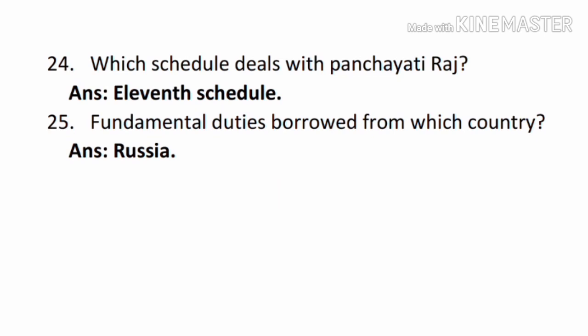Question twenty-three: the Concurrent List was borrowed from which country? — Answer: Australia. Question twenty-four: which schedule deals with Panchayati Raj? — Answer: the 11th schedule. Question twenty-five: fundamental duties were borrowed from which country? — Answer: Russia.